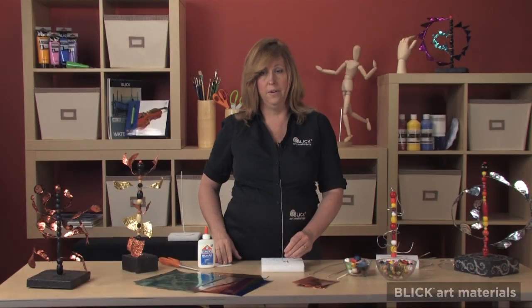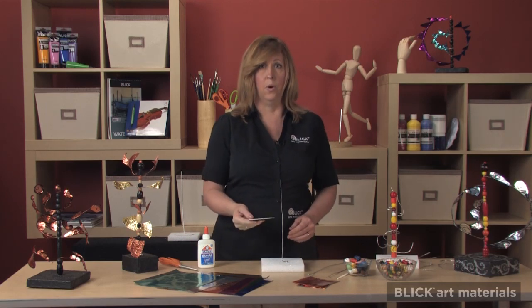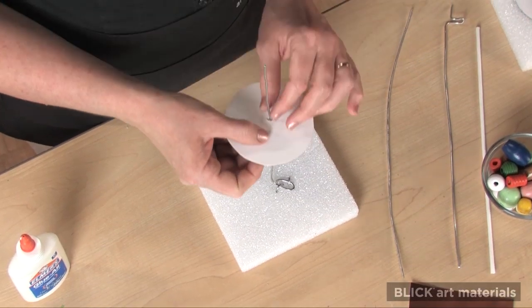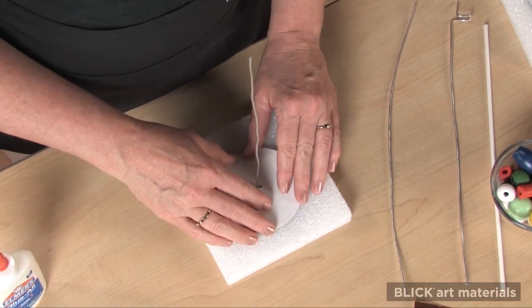To make it steadier, cut a cardboard circle with a hole in the middle to fit over the wire and glue that to the base.